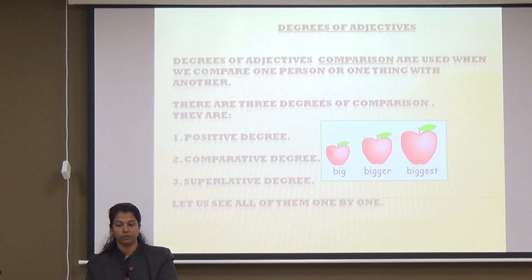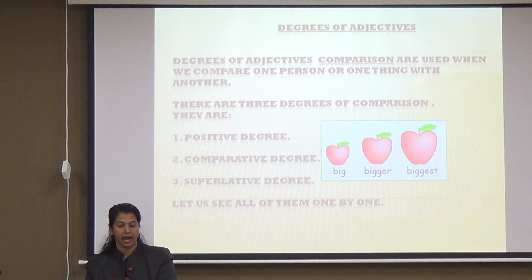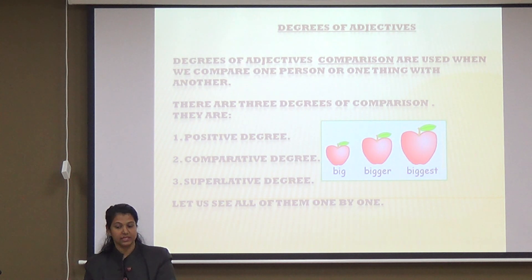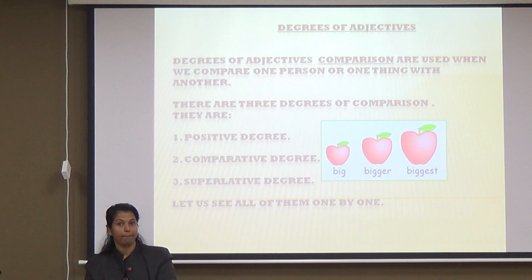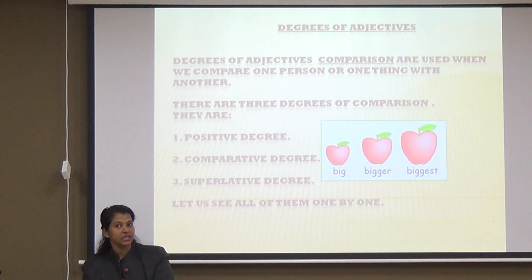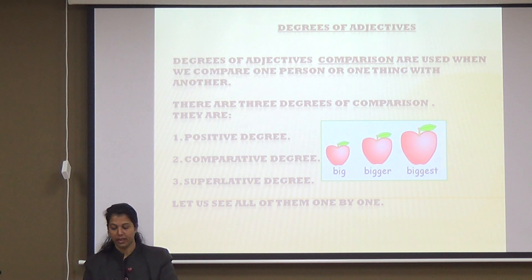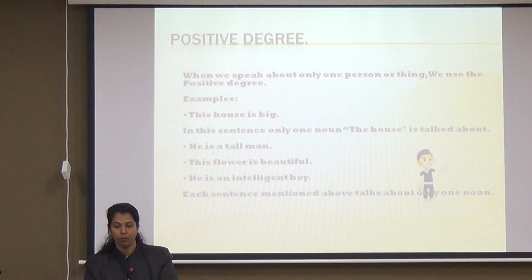There are three basic degrees of comparison. They are positive, comparative, and the superlative degree. As the given example shows, there is a big apple. The apple is bigger, and the third apple is the biggest apple. Now let's see all of them one by one.